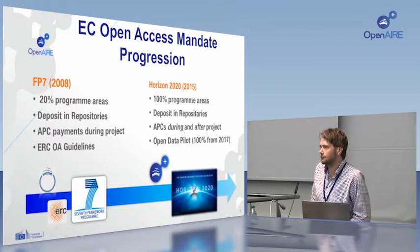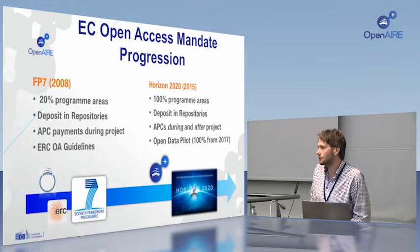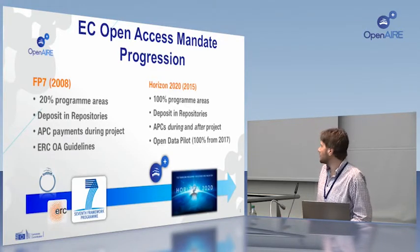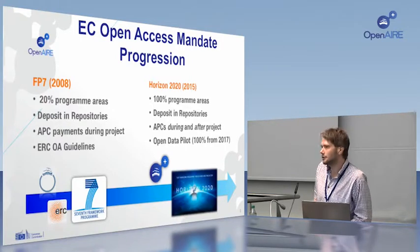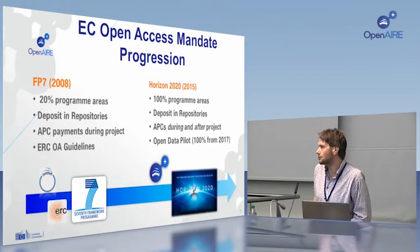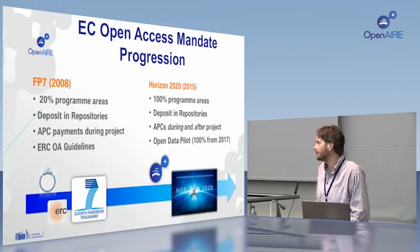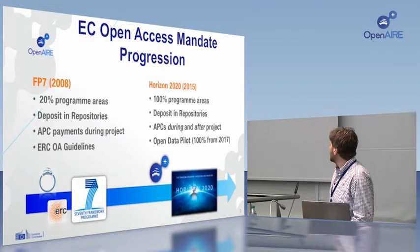The mandate is a green mandate. So even if you publish in APC journals, you still must deposit your paper within a repository. Although the EC does pay for APCs both from project budgets, we are also running a pilot to disseminate funds post-grant. This is called the FP7 post-grant pilot.